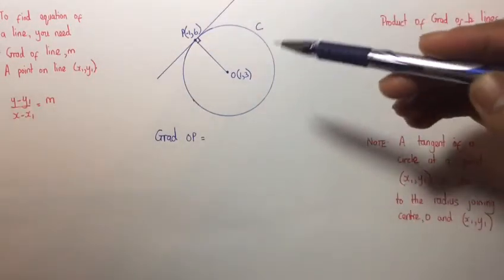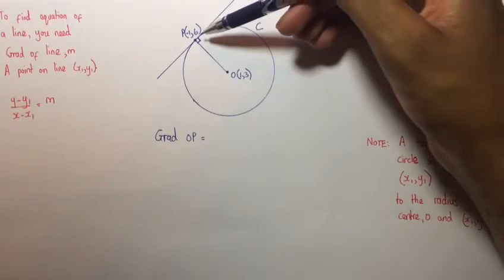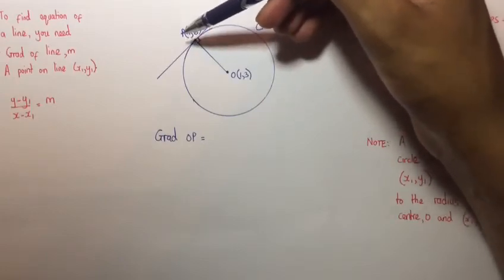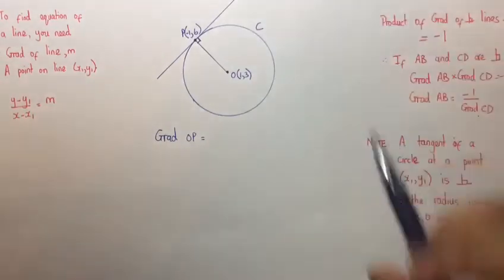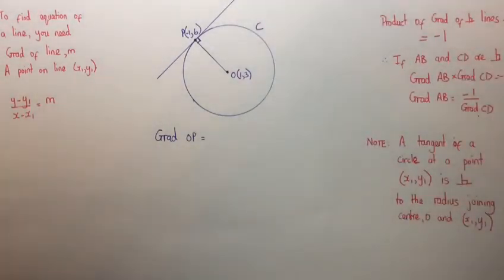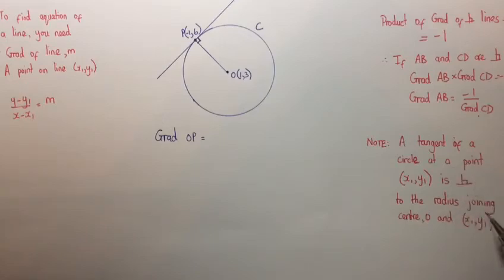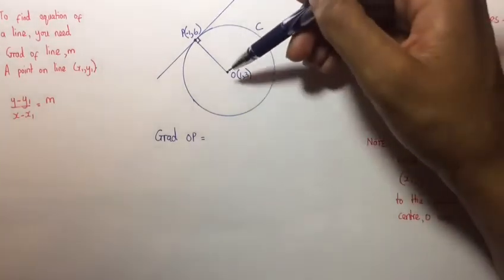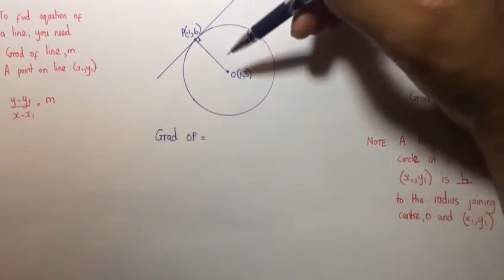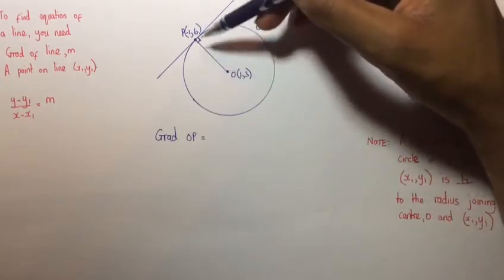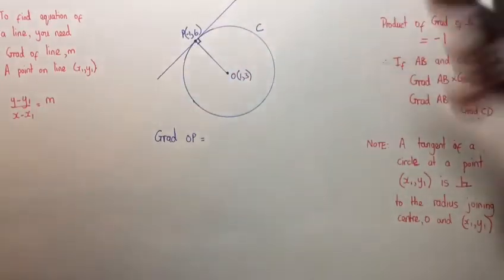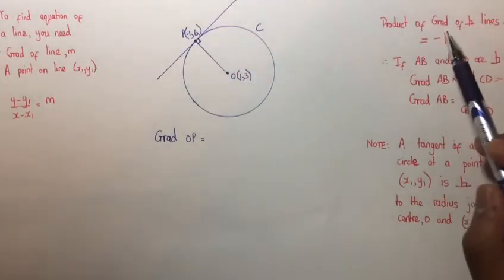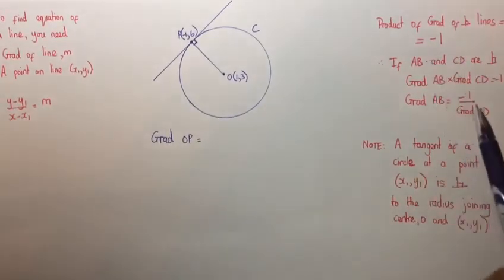We already have the point that lies on the line, which is point P, so we must first find the gradient of the tangent. Before we do that, let's remember that a tangent of a circle at any point is perpendicular to the radius joining the center and that point. That simply means that in this case, radius OP is perpendicular to the tangent at P.